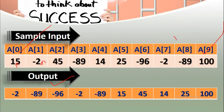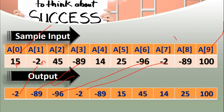Order se matlab ki minus 2 hai, jo minus 2 hai wo pehle aaya hai, toh yeh yahan par aayega. Iske baad kaun sa minus ka aa raha hai - toh yeh yahan par aayega. Phir minus 89 ke baad mein kaun sa number hai minus ka? 96, toh yeh yahan par aayega. After that, minus 2. Order change nahi karna hai inka, pehle saare negative ho gaye, bina order change kiye.